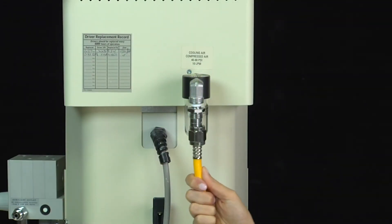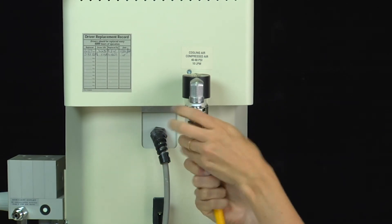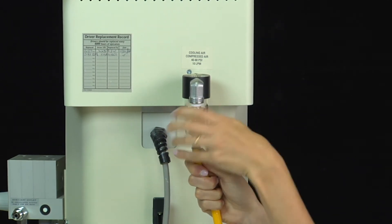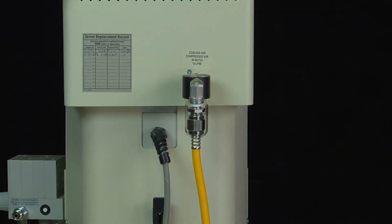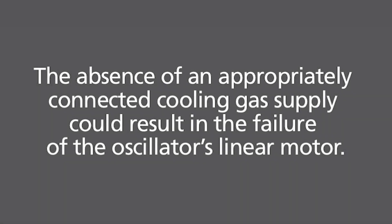A second DISS connection is labeled cooling air. This connection accepts a 50 PSI compressed air supply, which cools the oscillator. It's important to note that the absence of an appropriately connected cooling gas supply could result in the failure of the oscillator's linear motor.